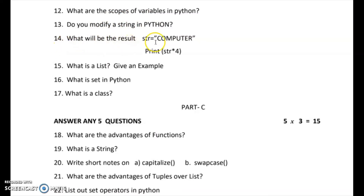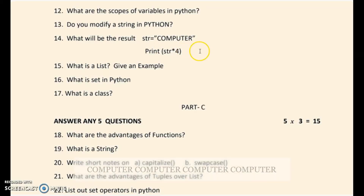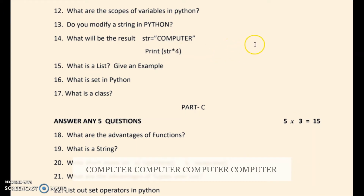Question 14: what will be the result of this code? String STR is equal to 'computer' and print STR multiplied by 4. The repeating operator multiplies the string value by the number of times — so 'computer' is printed 4 times, each separated by a space, all in capital letters: COMPUTER COMPUTER COMPUTER COMPUTER.